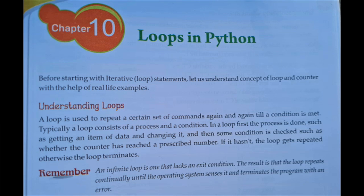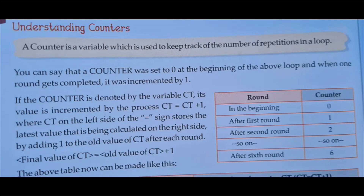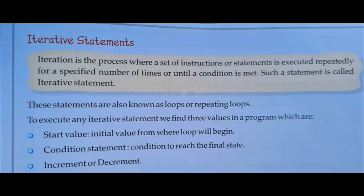An infinite loop is one that lacks an exit condition, so the result is that the loop repeats continually until the operating system senses it and terminates the program with an error. Understanding counters: a counter is a variable which is used to keep track of the number of repetitions in a loop.